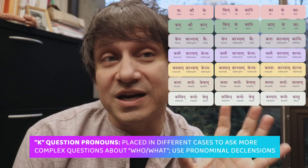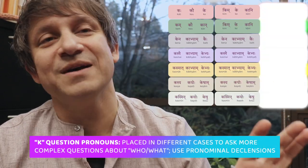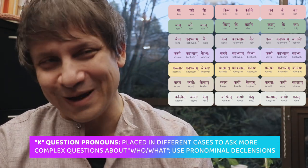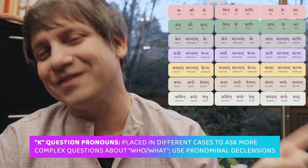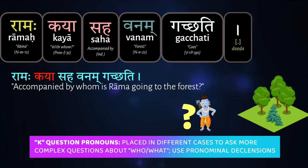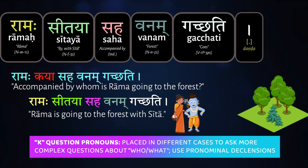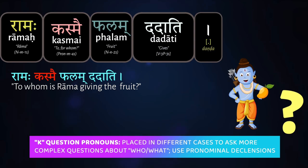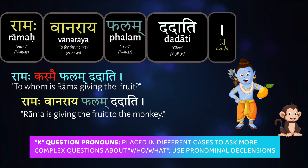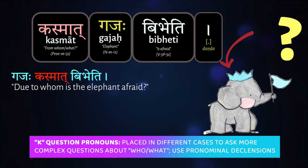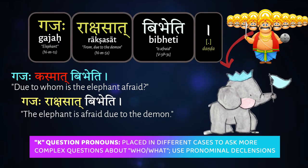Like with the other pronouns, you can put the K-pronouns in different cases as well to ask different kinds of questions. These will follow the pronominal declensions, not the a or ā stems. So: 'Rāmaḥ kasyāḥ vanam gacchati' — with whom (feminine) is Rāma going to the forest? 'Sītayā vanam gacchati' — going with Sītā. 'Rāmaḥ kasmai phalam dadāti' — to whom (masculine) does Rāma give the fruit? 'Rāmaḥ vanārāya phalam dadāti' — Rāma gives the fruit to the monkey. 'Kasmāt gajaḥ bibheti' — from whom is the elephant afraid? 'Gajaḥ rākṣasāt bibheti' — the elephant is afraid of the demon.